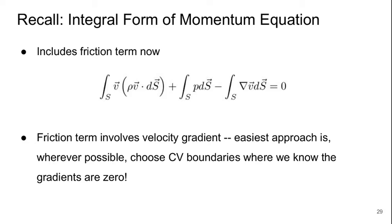Remember the integral form of the momentum equation. Now we'll add a new term, this final term, which is related to friction, and it comes from the velocity gradients around the surface of the control volume. The easiest approach whenever possible is to choose the control volume boundaries at locations where we know that the velocity gradient, or at least the velocity gradient normal to the boundary, is zero.